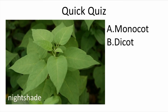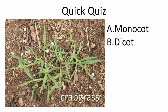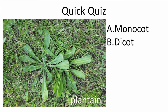Nightshade — it's a dicot. Crabgrass — monocot. And plantain — it's a dicot.